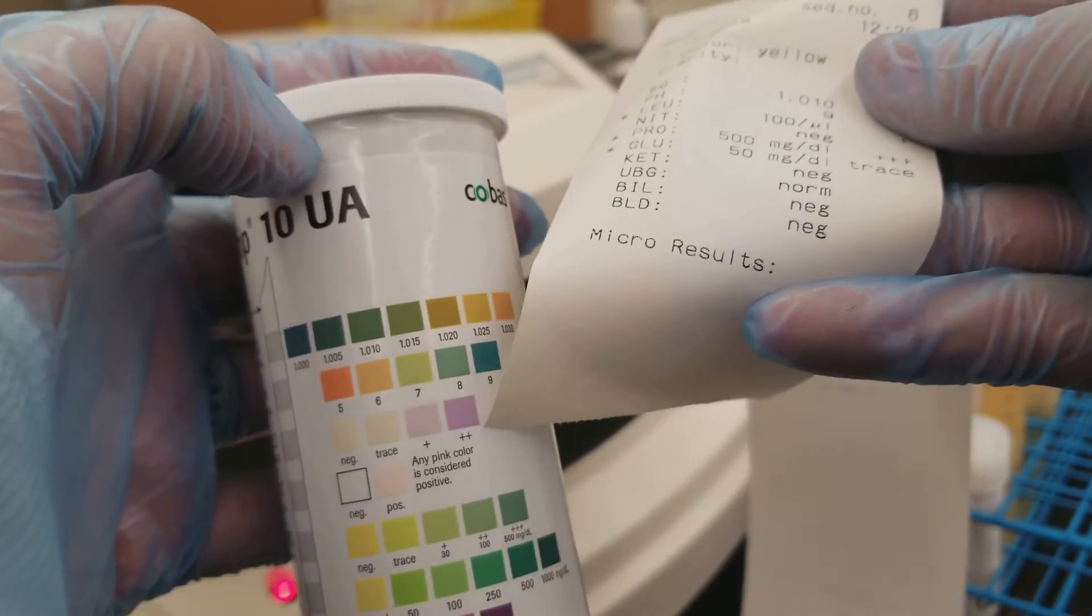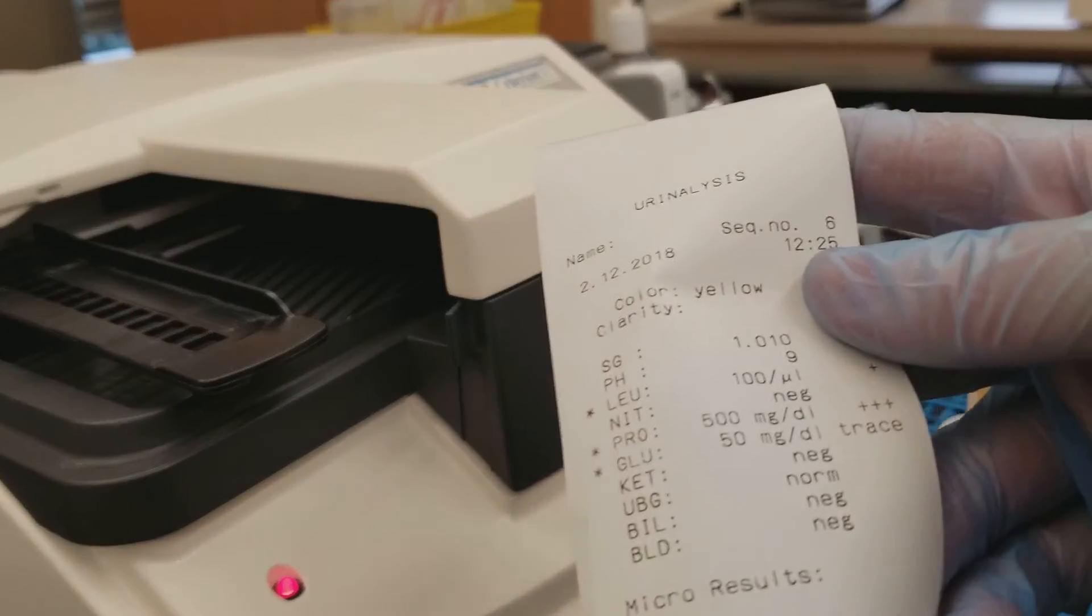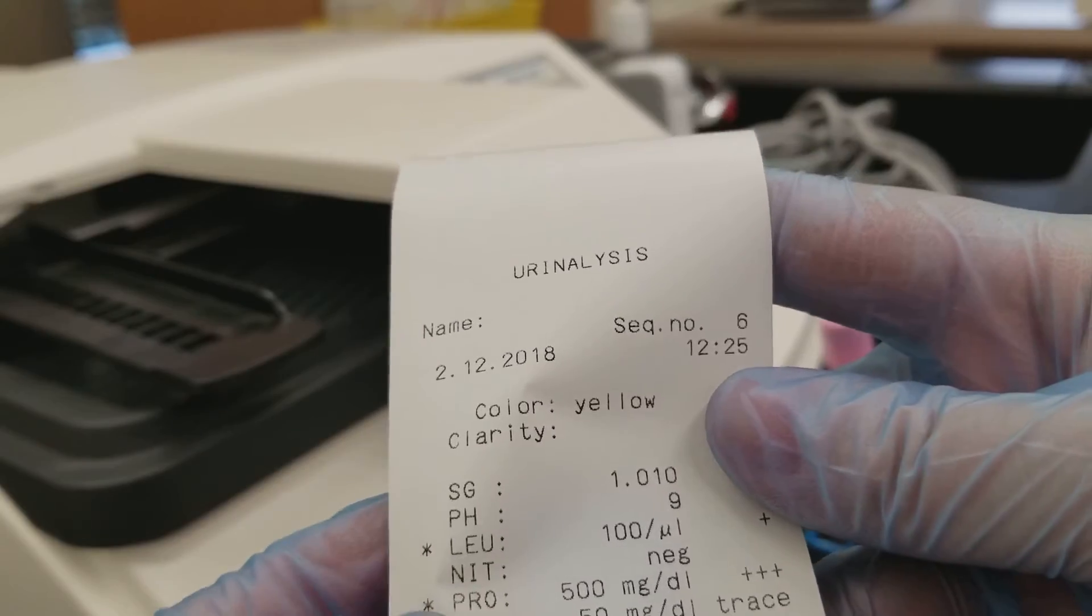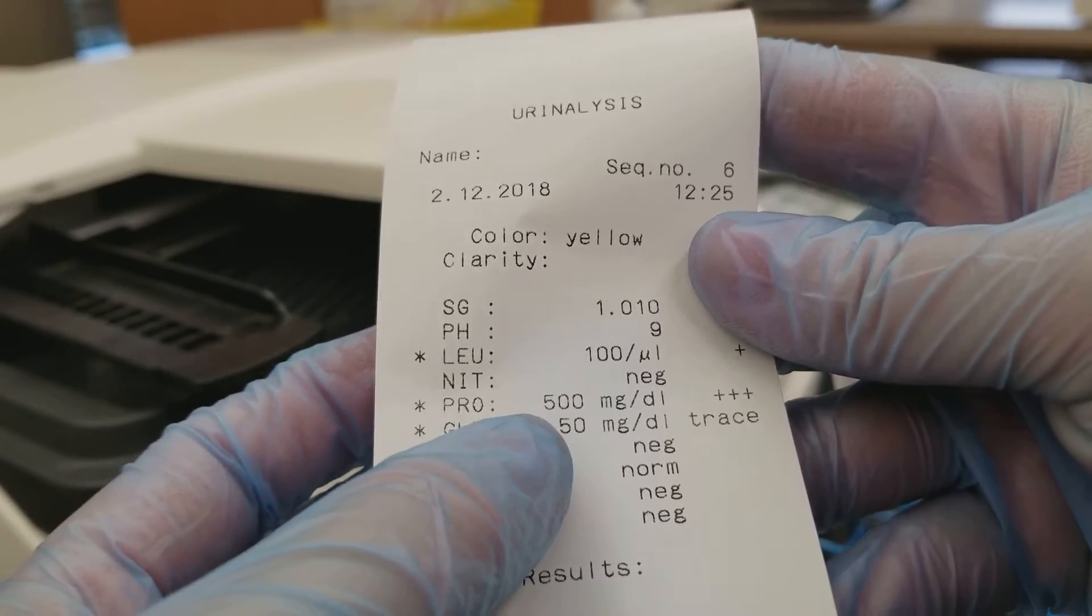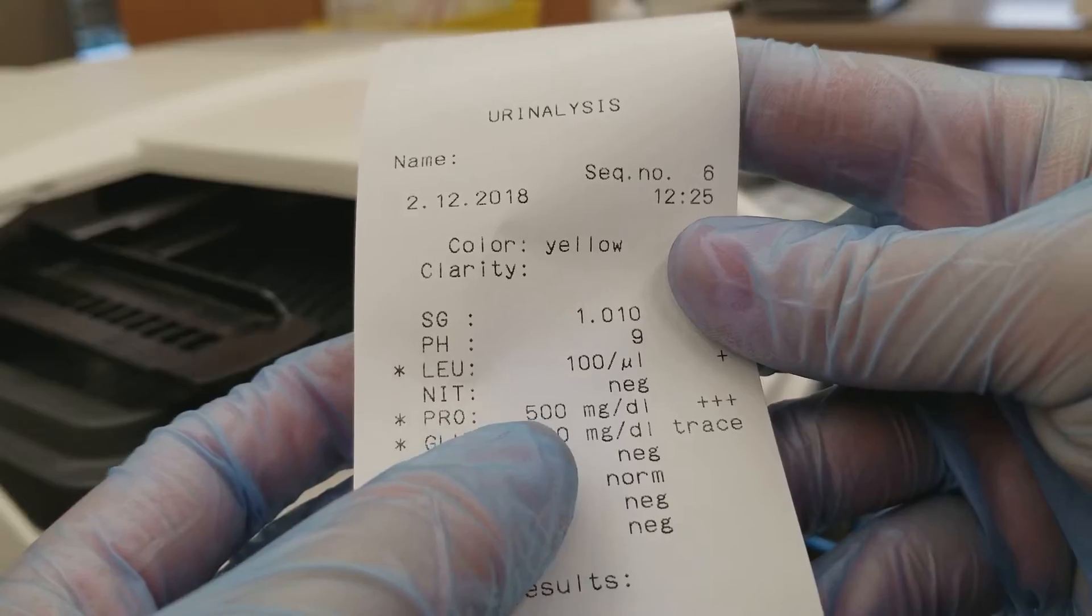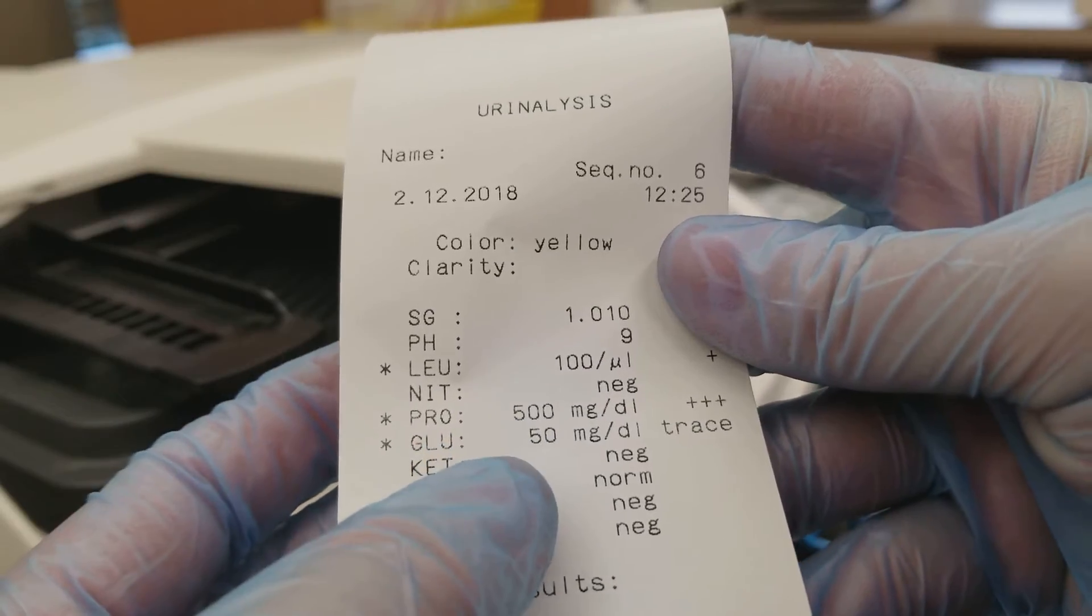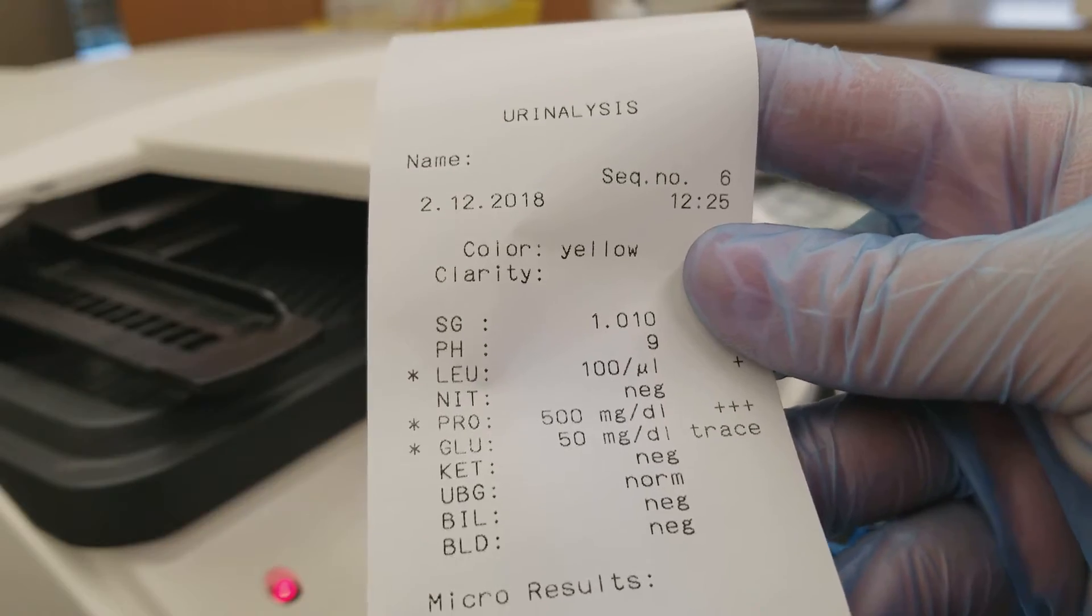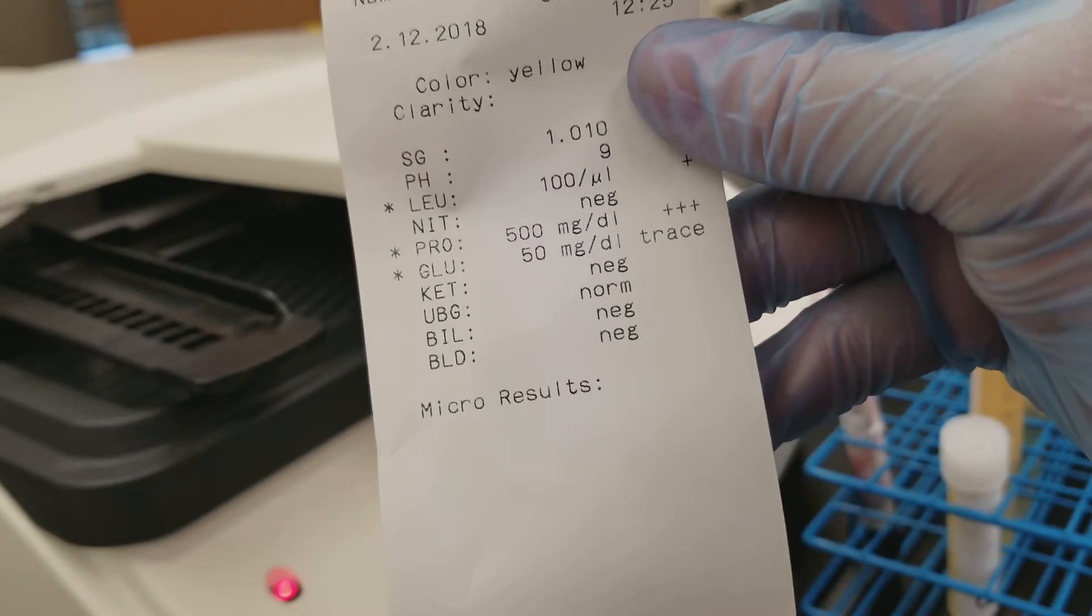Nitrate is negative and protein is 500, holy cow definitely some glomerular damage there. Glucose of 50, wow that's also not good, you shouldn't have any glucose in there.